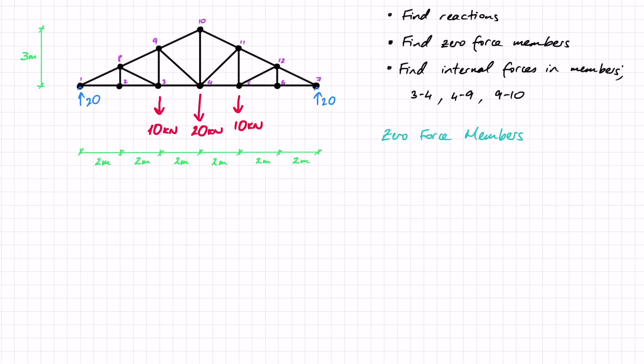Now we'll move on to finding zero force members. Every joint needs to be in equilibrium, and from those equations we can identify zero force members. Looking at joint 2 — it's unloaded with forces N2-3, N2-8, and N1-2. Doing the sum of forces in Y equals zero, the only contribution is N2-8, so N2-8 must equal zero.